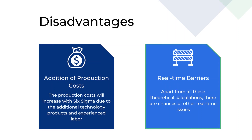The third disadvantage is addition of production costs. Production costs will increase with Six Sigma due to the additional technology products and experienced labor required. An increase in production costs may be due to various reasons like an increase in labor costs, materials used, and time taken for production. An increase in the production rate will increase the costs of the products. Therefore, there are chances that customers will look for lower-priced products, which are not suitable for Six Sigma and lean manufacturing.